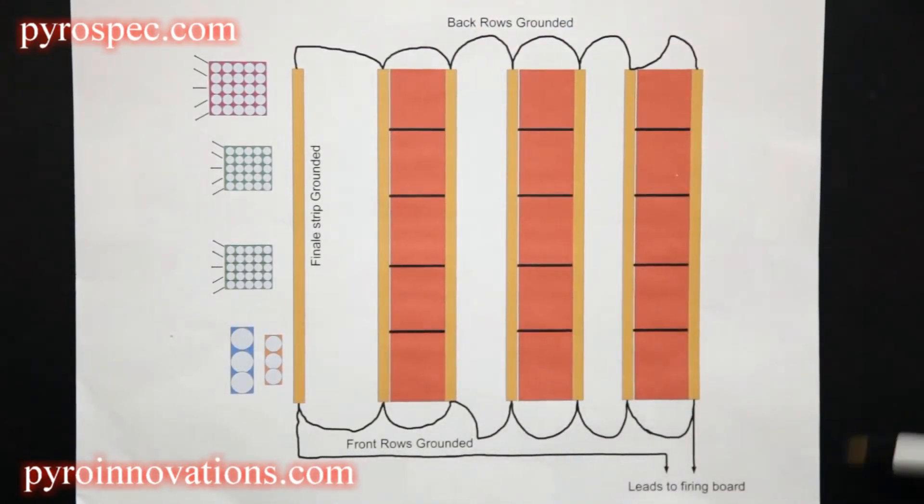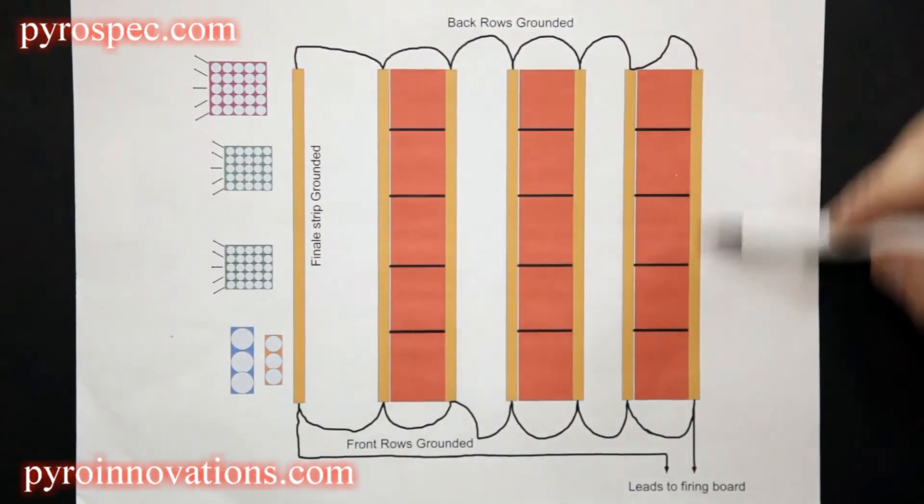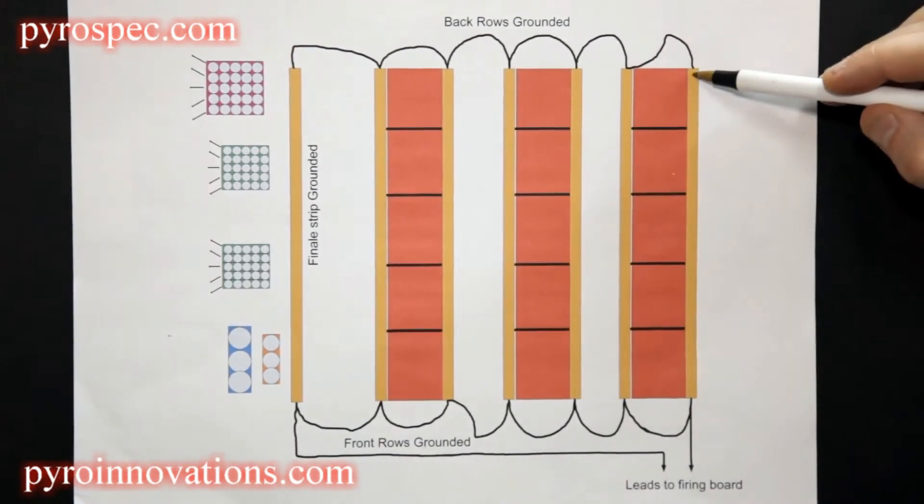We don't need an additional home run line because internal to the strip is a ground wire that connects the rear terminal to the front terminal.